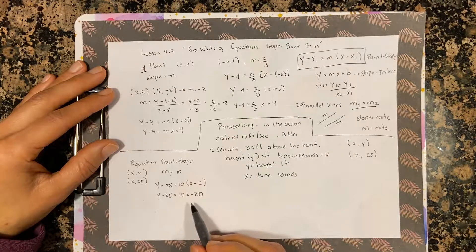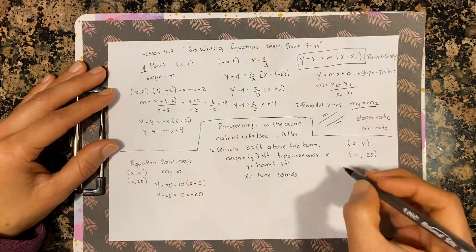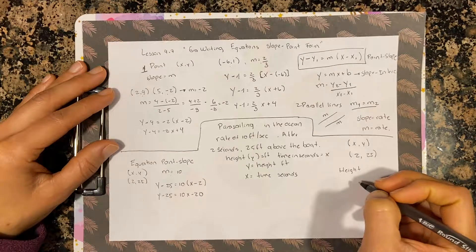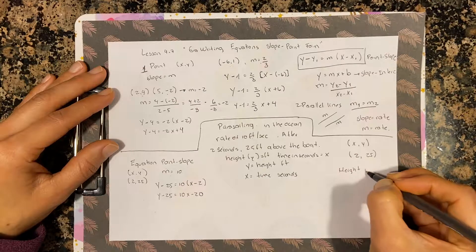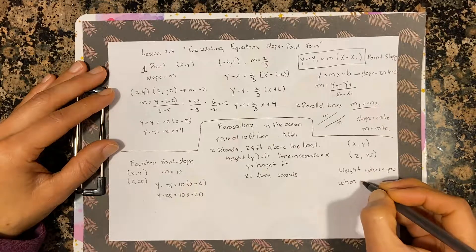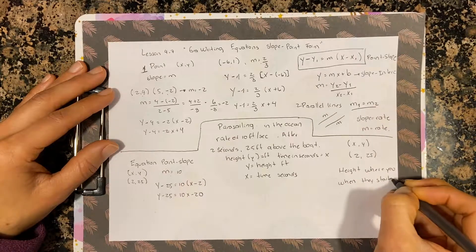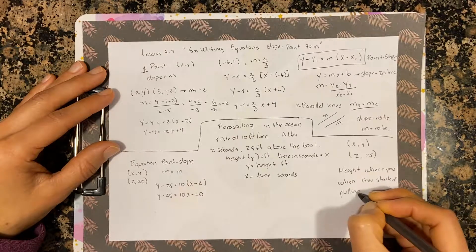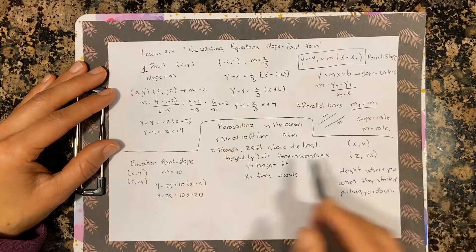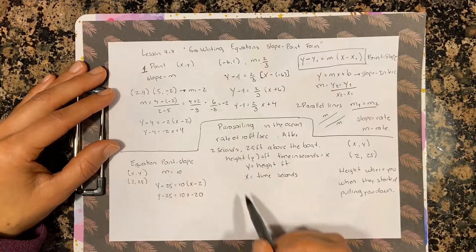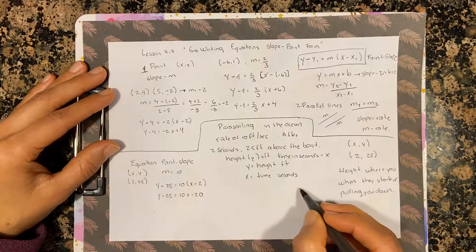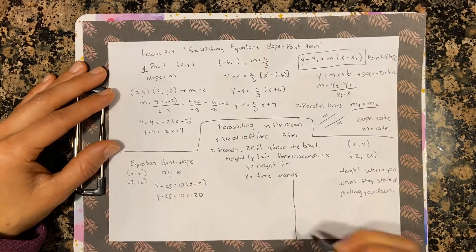Another question might ask: what height were you when they started pulling you down — in other words, when you finished parasailing? That would be when time equals zero.